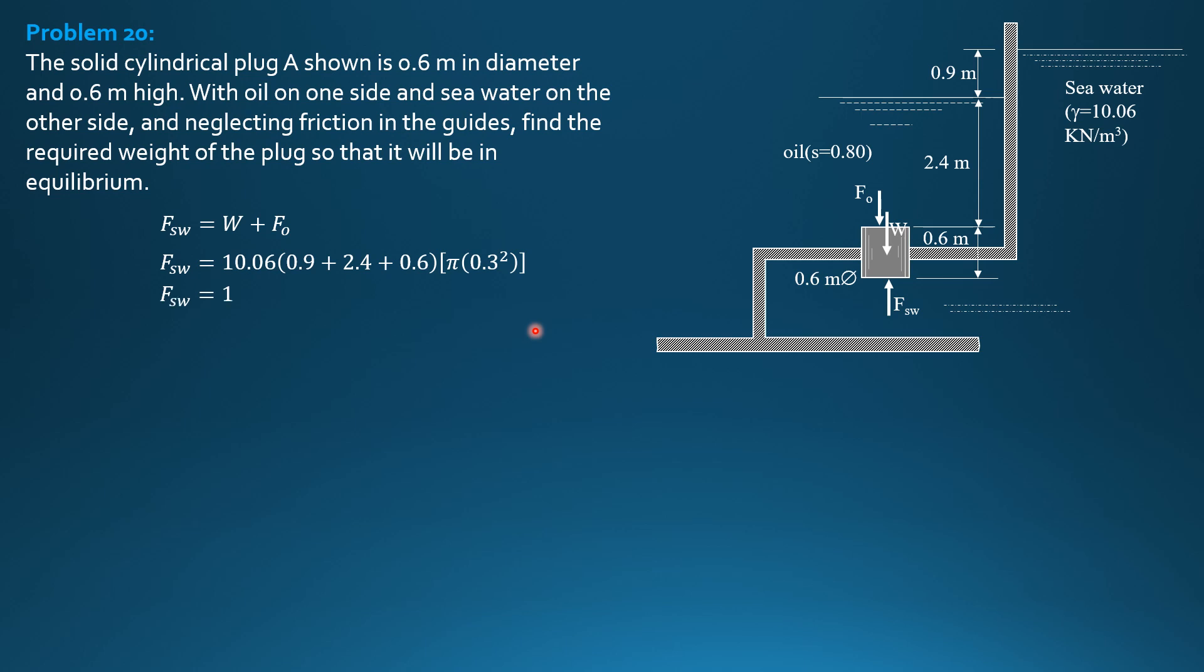So FSW is equal to 11.093 kilonewtons. F of oil, specific weight of oil, 0.8 times 9.81 times 2.4 times π times 0.3 squared. So FO is 5.326 kilonewtons.